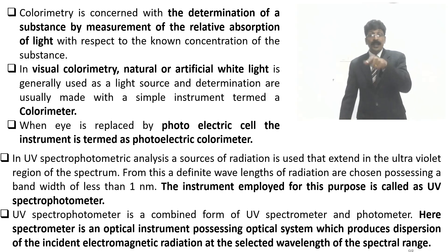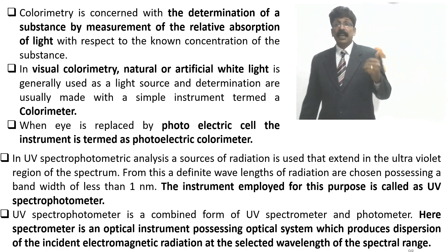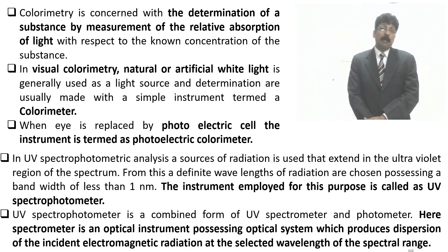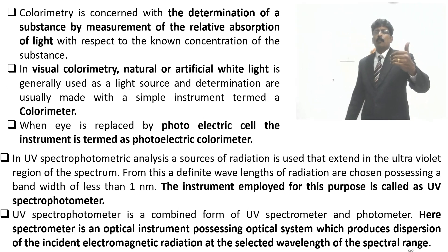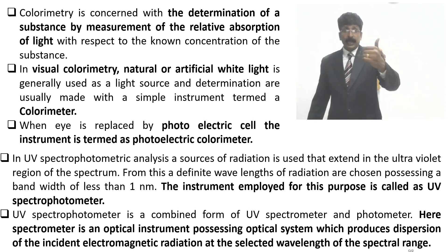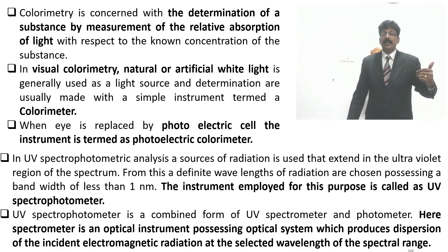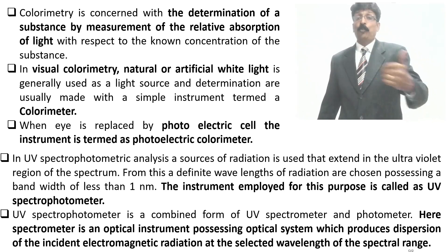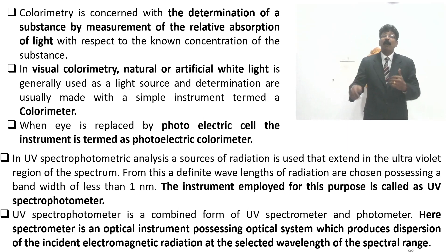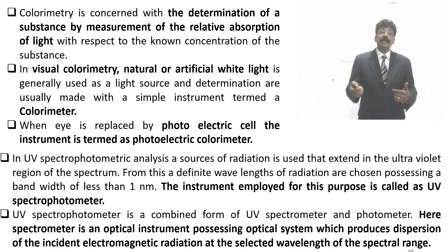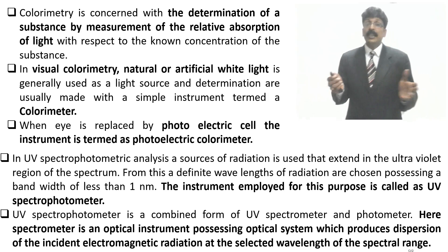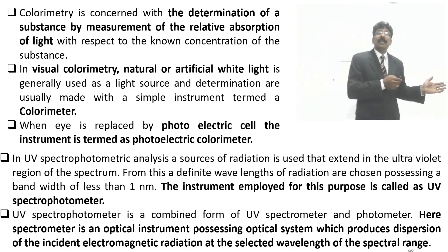UV radiation covers below 400 nanometers down to about 200 nanometers. A UV spectrophotometer combines a diffraction grating to produce monochromatic light in the 1 to 400 nanometer UV range, with a photomultiplier or phototube as detector. The spectrometer is an optical instrument. If using visible radiation the instrument is called a colorimeter; if using UV radiation it is called a UV spectrophotometer.